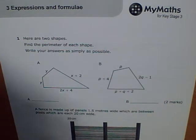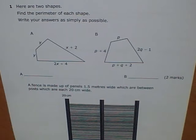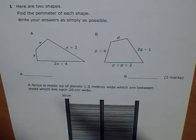Welcome to the video for Caboodle 1C, chapter test 3 on expressions and formulae. Question 1: Here are two shapes. Find the perimeter of each shape.